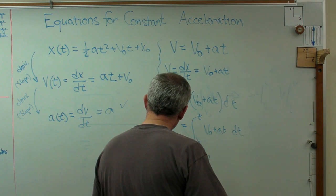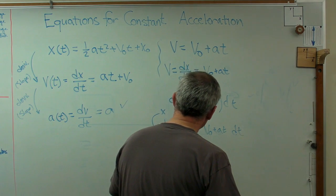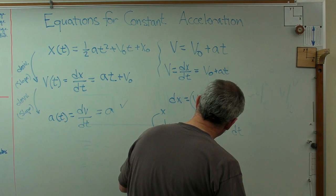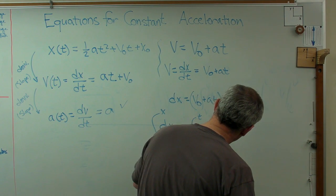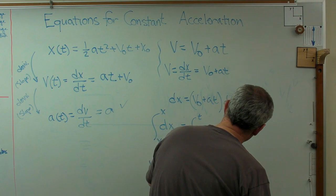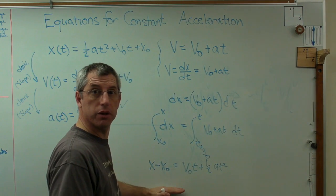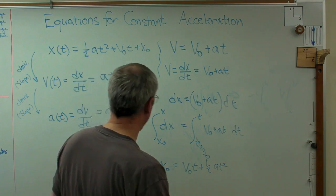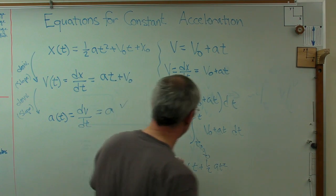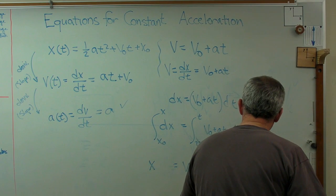And what am I going to get? I'm going to get x minus x0 equals v0 t plus one half a t squared. So you can see that's almost right. Make sure I stay in frame here. Let me make one change here. Let's push the x0 over to the other side.